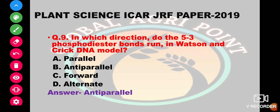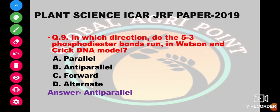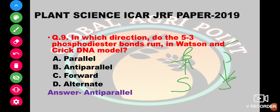In which direction do the 5' to 3' phosphodiester bonds run? One strand runs 5' to 3' and the other runs 3' to 5'. Both strands run in antiparallel direction. The options are parallel, antiparallel, forward, or alternate. The answer is antiparallel direction.